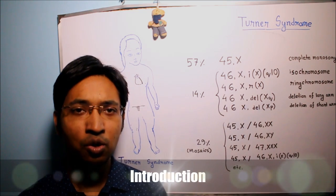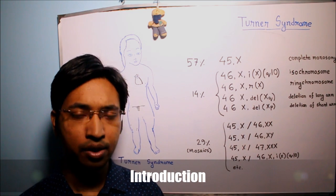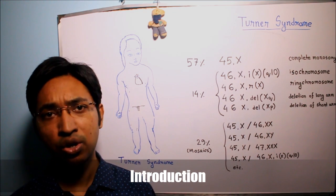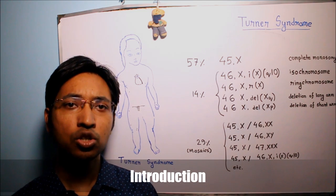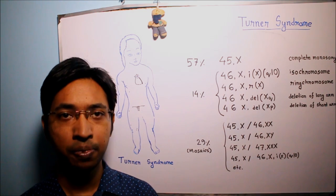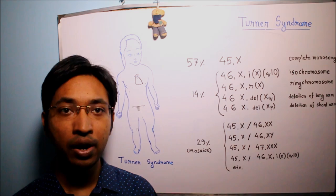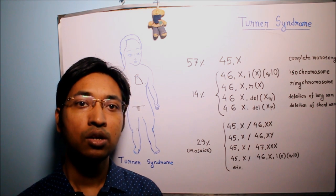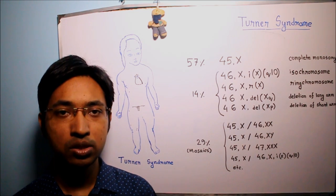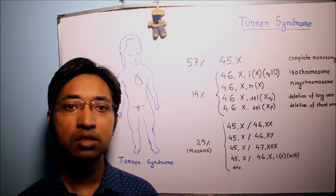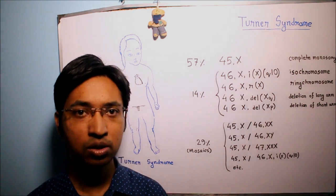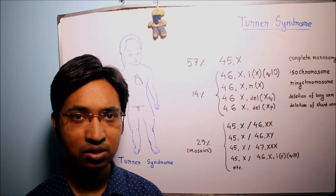First question: what do we mean by Turner syndrome? Turner syndrome is a genetic disorder, and as a matter of fact it is the most common sex chromosome abnormality in females. A female with Turner syndrome has only one normal X chromosome instead of the usual two. The disease was discovered in 1938 by Henry Turner.